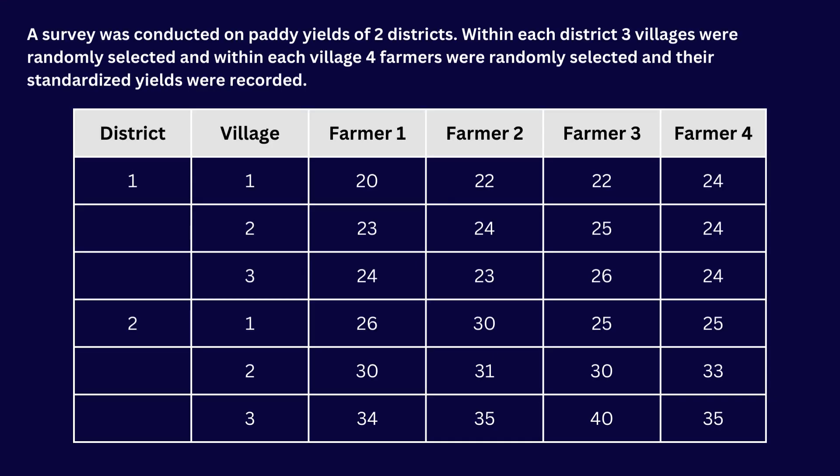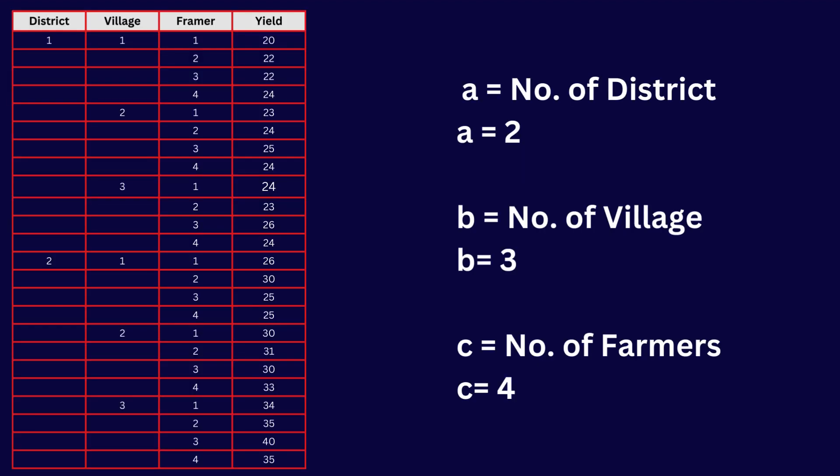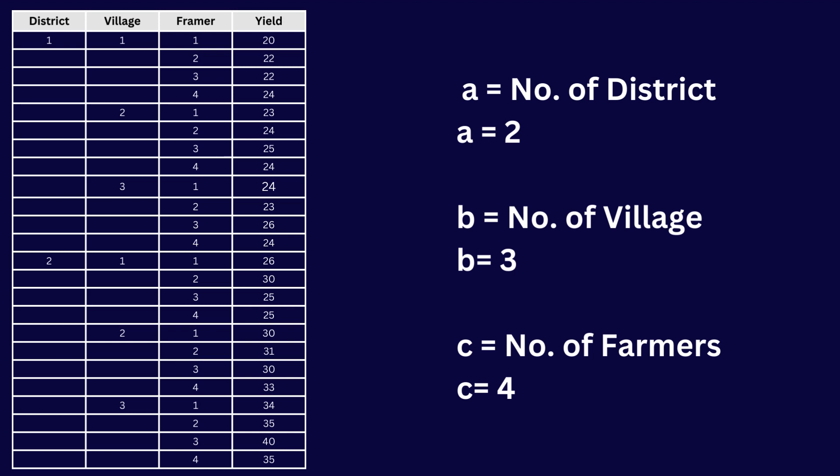Our first step is building the data in a format suitable for calculation. What I did was make four columns named district, village, farmer, and yield. District 1 contains three villages, and village 1 contains four farmers, village 2 contains four farmers, and village 3 also contains four farmers. This structure makes it easy to perform our calculations.